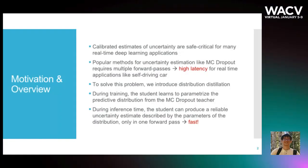Calibrated estimates of uncertainty are safety-critical for many real-time deep learning applications. Popular uncertainty estimation methods for deep neural networks like MC Dropout require multiple forward passes of a neural network. This introduces high latency for real-time applications like self-driving cars, which could lead to severe safety hazards.